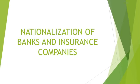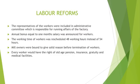Regarding nationalization of banks and insurance companies: the big capitalist families had their own banks and insurance companies, which encouraged the capitalist system. For the stability of the country, all insurance companies were nationalized and merged under the control of State Life Corporation.